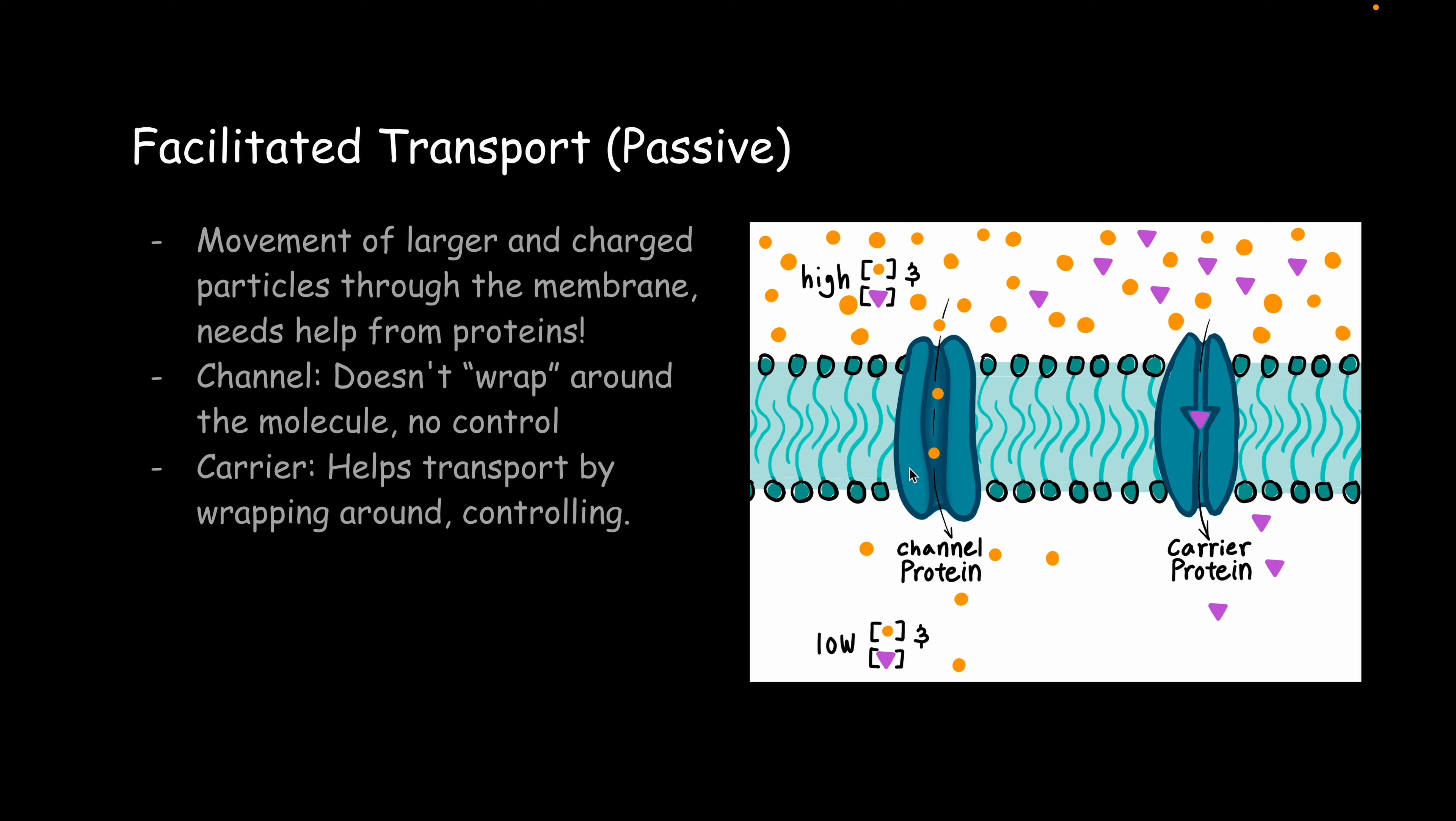So, we have a channel and we have a carrier. The channel is just, think about it. There's a channel, like a canal, and they're going to go through there. You have a carrier protein, which is kind of going to wrap around your molecule, and it's going to help it go down.